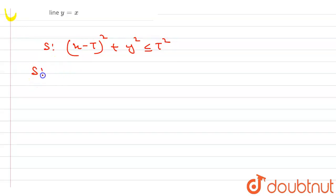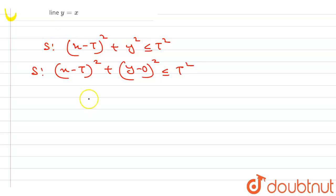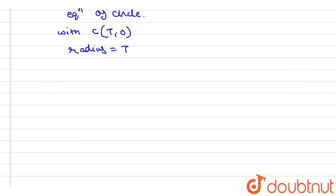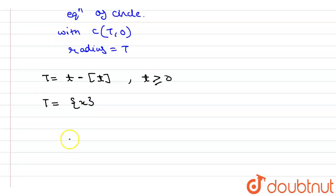We can rewrite S as: (x minus t) whole square plus (y minus 0) whole square, less than or equal to t square. We can see that this is the equation of a circle with center (t, 0) and radius equal to t. Now, t equals t minus the greatest integer function of t, which is the fractional part of t.